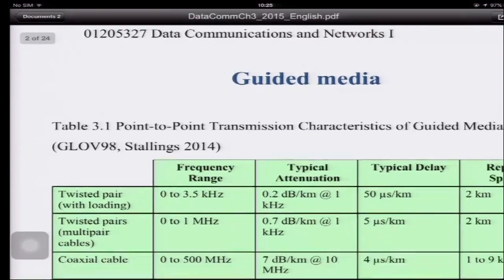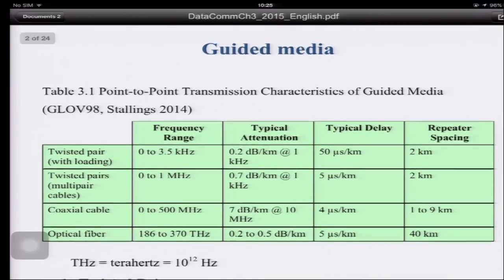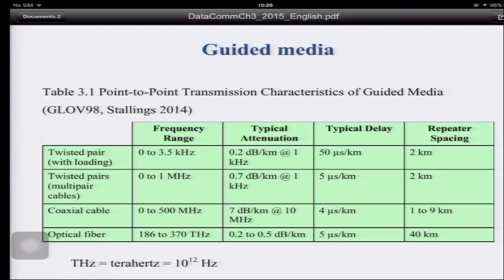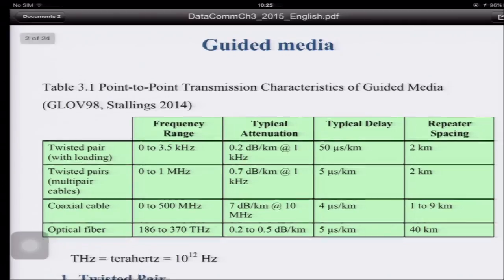Now let's consider the guided media. Looking at the comparison table for twisted pair, coaxial cable, and optical fiber: they have different characteristics and operate at different frequency ranges. Twisted pair with loading operates at 0 to 3.5 kilohertz, and with multi-pair cable up to 1 megahertz. Coaxial cable can go to 500 megahertz. Optical fiber can go to 185 to 370 terahertz — one terahertz is 10^12 Hz — a much higher frequency range because it transmits light.